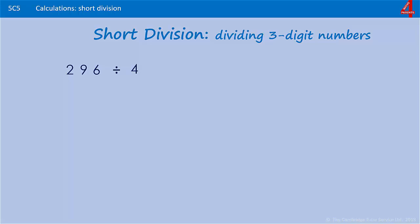This video is an introduction to the method of short division, which children usually start learning in year five. To start with, your child will learn to divide a three-digit number by a one-digit number. So we're going to start with one like that: 296 divided by 4.